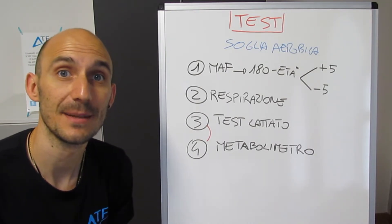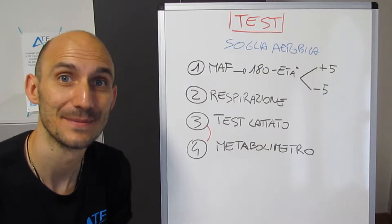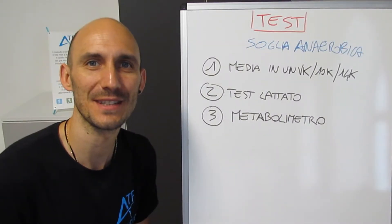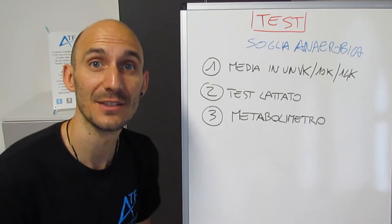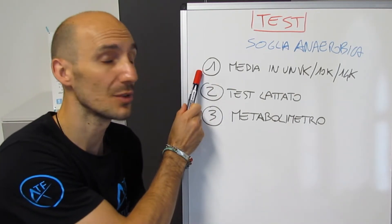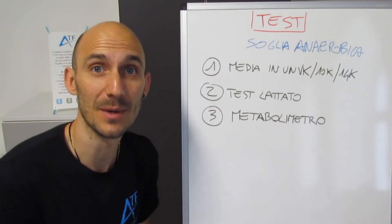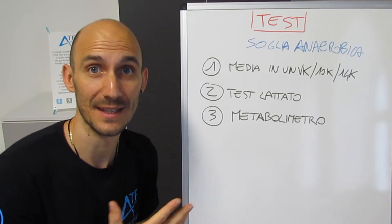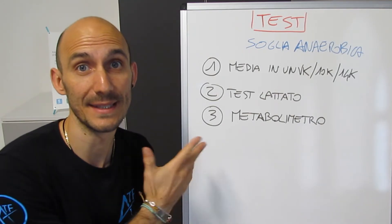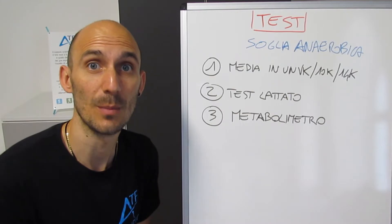Andiamo adesso a vedere per la soglia anaerobica cosa possiamo fare. Eccoci qui con i test per individuare la soglia anaerobica. Abbiamo un test da campo, cioè il primo, e i due test di laboratorio che vi ho presentato anche prima, perché durante quelle valutazioni vengono prese entrambe le soglie.